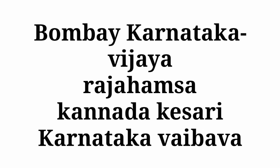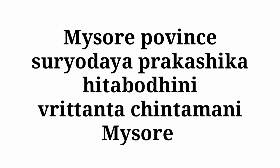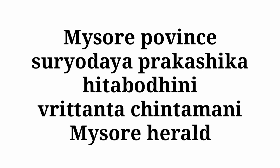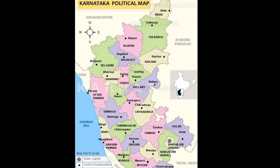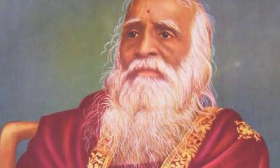Now let us see the role of newspapers and literature in the integration movement. Daily newspapers, weekly magazines, and literary works totally inspired the integration movement — much as mass media plays an important role today. The famous newspapers related to Bombay Karnataka were Vijaya, Raja Hamsa, Kannada Kesari, and Karnataka Vaibhava. The famous newspapers related to Mysore provinces were Suryodhaya Prakashika, Hitabhodini, Virutanta Chintamani, and Mysore Herald. Many people fought for the Karnataka state, Kannada language, and Kannada culture — one of them was Alur Venkata Rao.